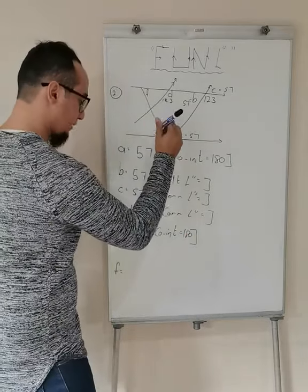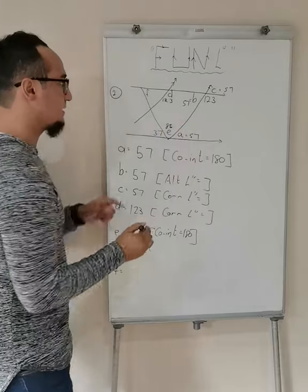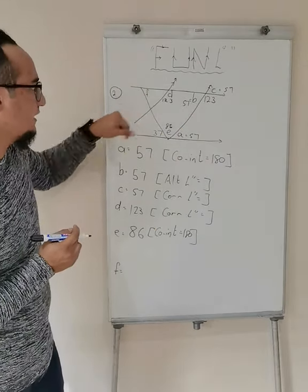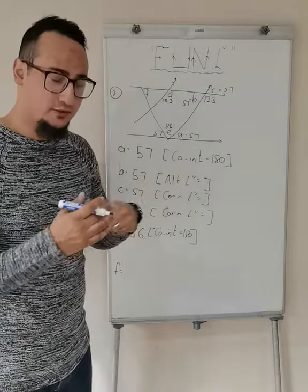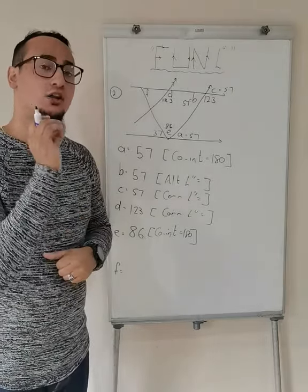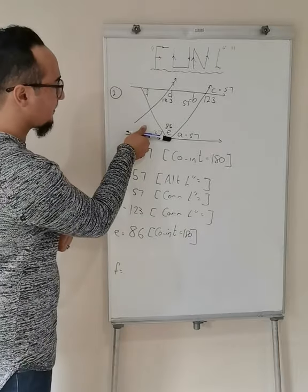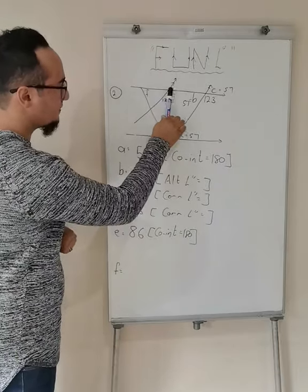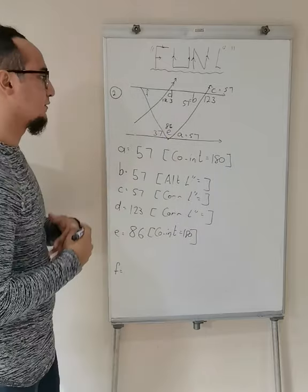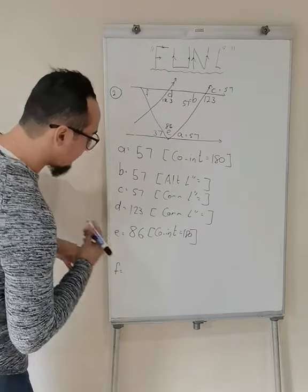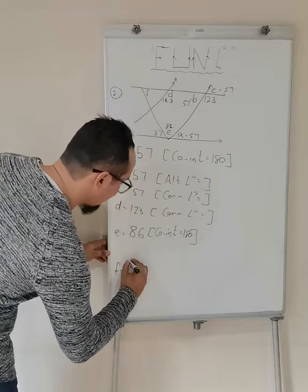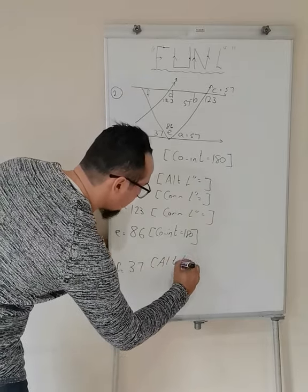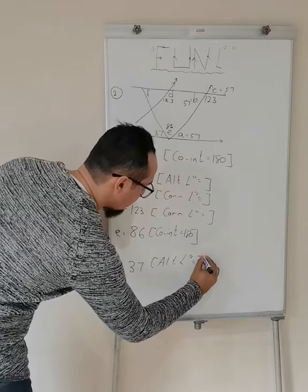The last one is angle F. What's the relationship between F and 37 degrees? They are equal. The reason: alternate angles. There is a parallel line, there is a parallel line, and that transversal makes the letter Z. Therefore, angle F is equal to 37 degrees, and my reason is alternate angles are equal.